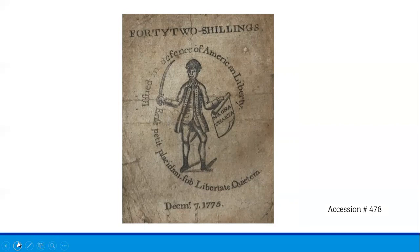When the Continental dollar failed, it left the young nation saddled with a heavy war debt and an unstable currency. The deep economic depression that followed the Treaty of Paris in 1783, and fear of further economic chaos, played a significant role in the decision to abandon the Articles of Confederation for the more powerful centralized government created by the federal Constitution. The experience of inflation and the collapse of the Continental dollar also prompted delegates of the Constitutional Convention to include the gold and silver clause in the Constitution, so that individual states could not issue bills of credit or make anything but gold and silver coin a tender in payment of debts. Following ratification, continentals could be exchanged for treasury bonds at just 1% of their face value.